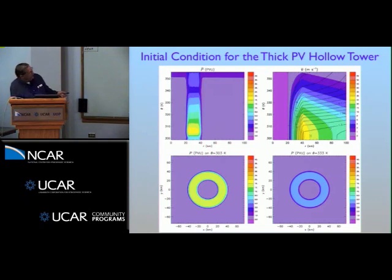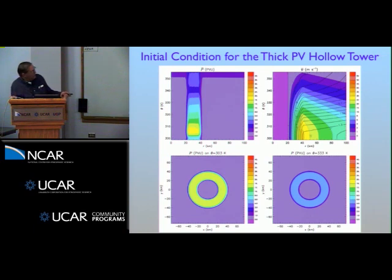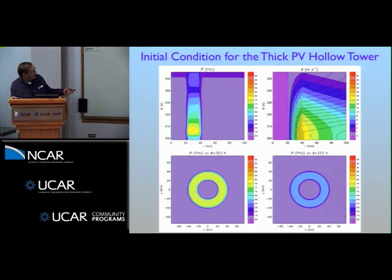Here's one of the two initial conditions Eric ran. The tangential wind as a function of radius shows about 30 meters per second wind max, with absolute angular momentum surfaces packed together just inside the radius of maximum wind where vorticity is really large. The PV cross-section shows very high PV in a ring and low PV in the center—that's what hollow means. Horizontal distributions of PV are shown at 303 Kelvin and 333 Kelvin.